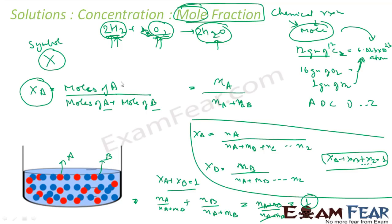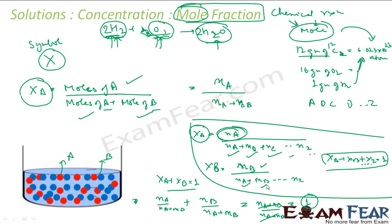To summarize: the mole fraction of component A is moles of A divided by moles of A plus moles of B for a binary solution. For a general solution with components A through Z, mole fraction of A equals moles of A divided by the sum of moles of all components — A, B, C, D through Z. Similarly for mole fraction of B. The sum of all mole fractions for any solution always equals 1. In a binary case, X_A + X_B = 1.